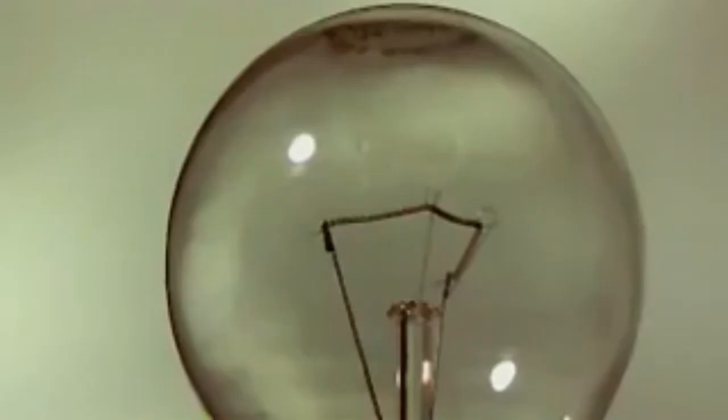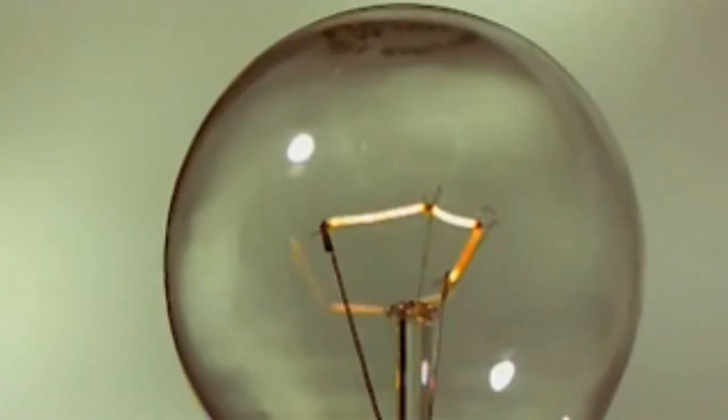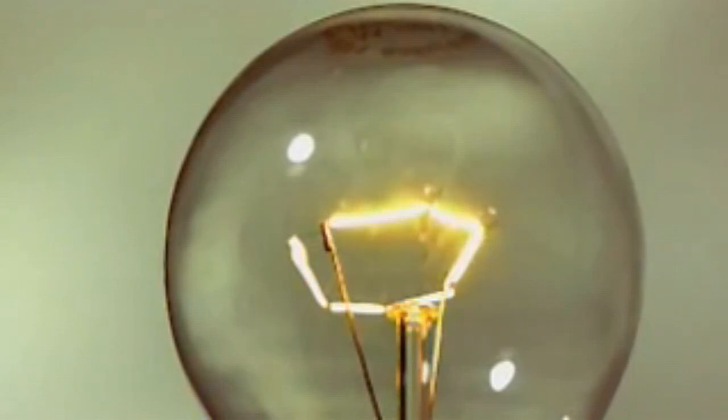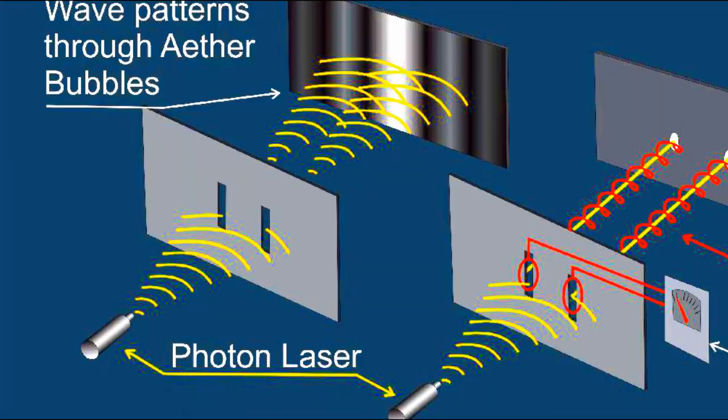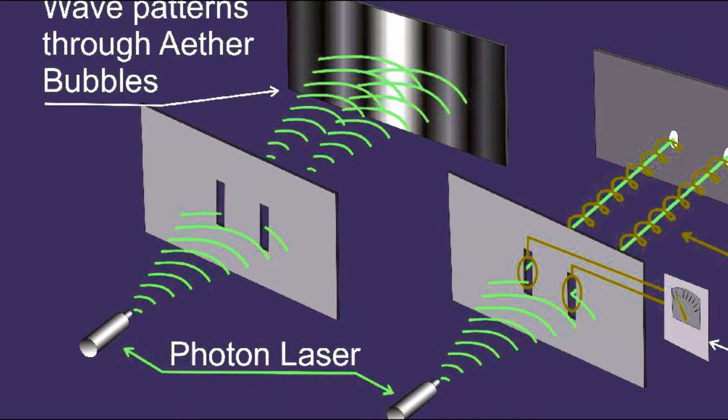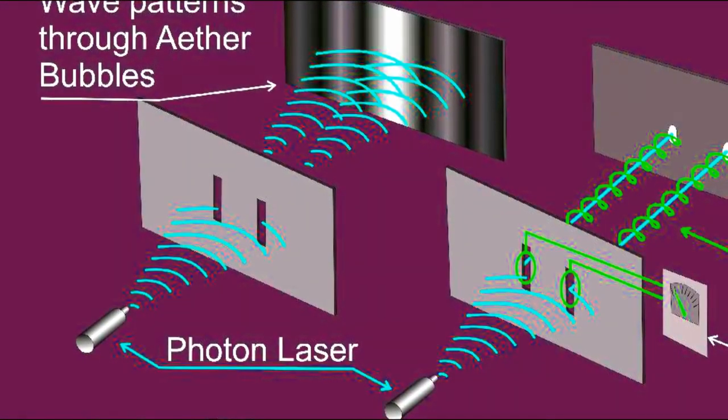A photon, as you probably know, is a particle of light. But since light is also a wave, what would happen if we shot photons one at a time at the double slits? Would they behave like particles and form a blot pattern? Or would they behave like a wave and form an interference pattern?